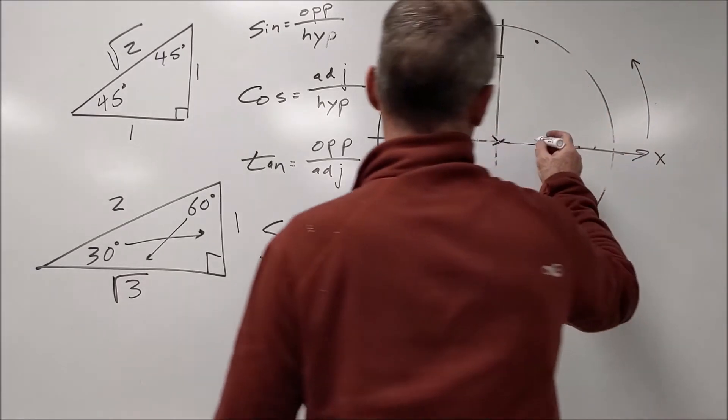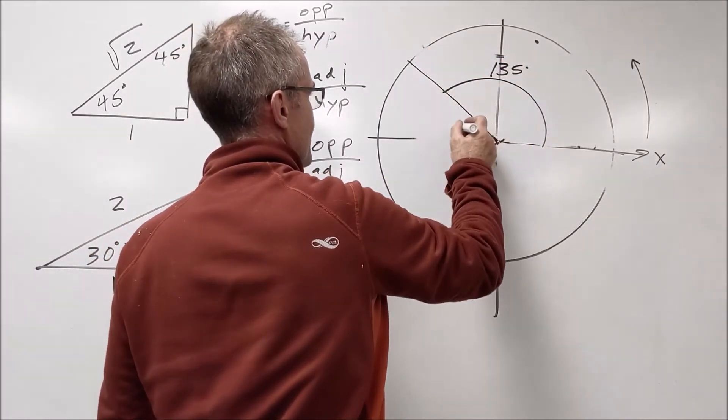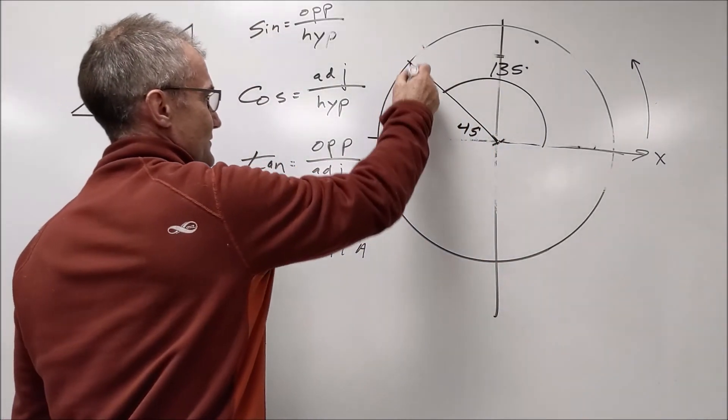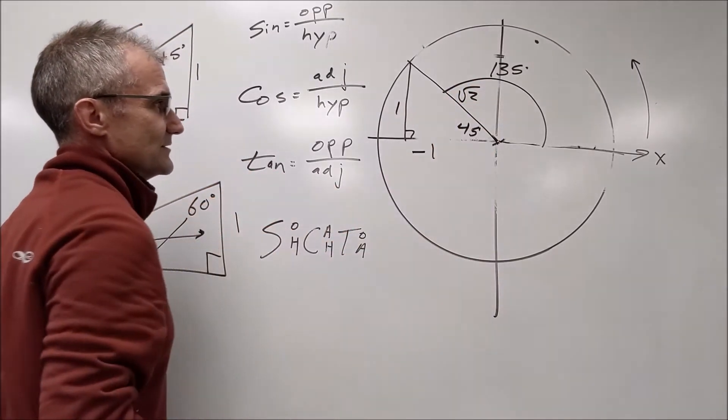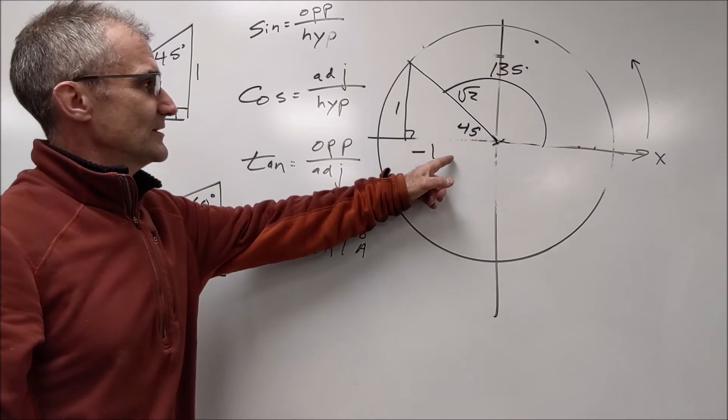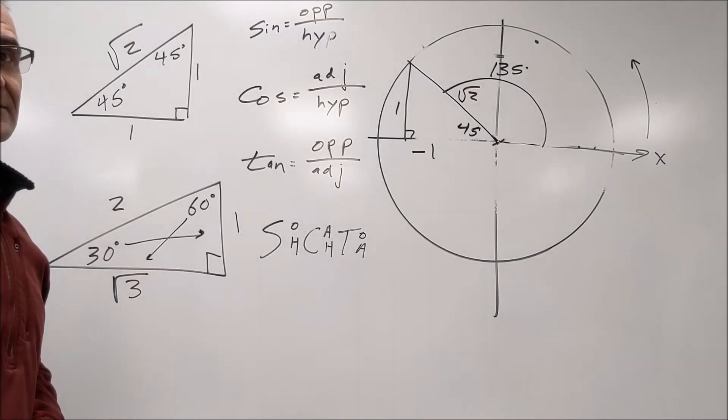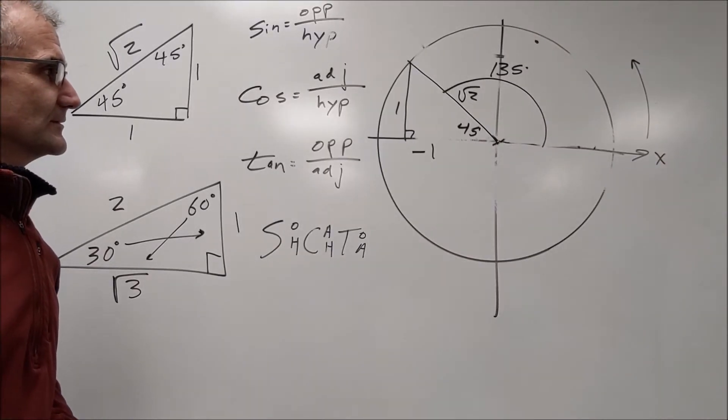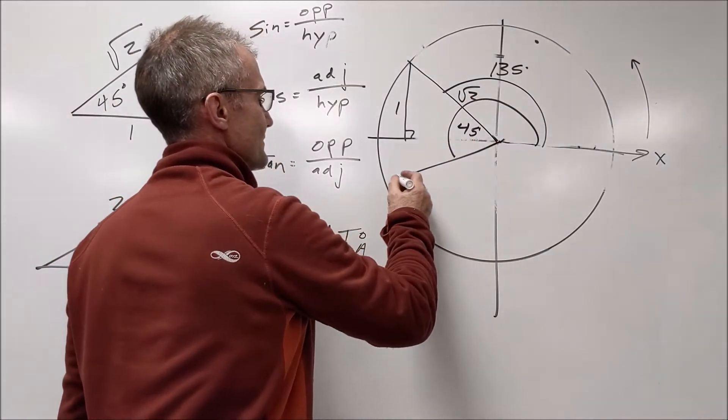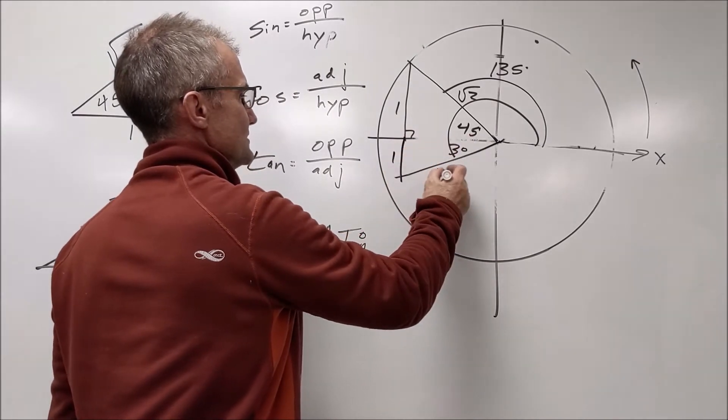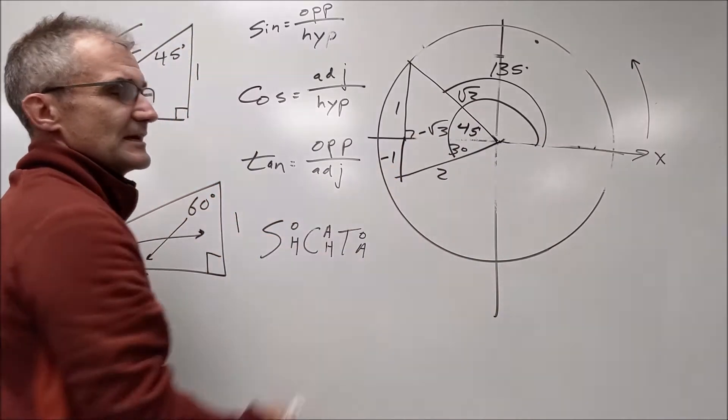So you've got to start here. You go to 135, a reference of 45. Reference triangle 1, 1, root 2. Don't forget your negatives. Tangent of 135 would be negative 1. Sine of 210: 1, 2, root 3. Don't forget your negatives. You rotate 210, you stop. You've got a 30 degree reference: 1, 2, root 3. Write in your negatives. Sine would be opposite over hypotenuse, negative one half.